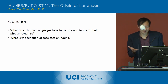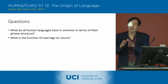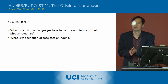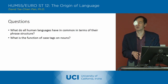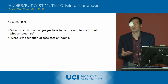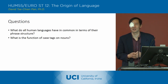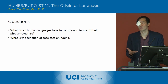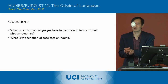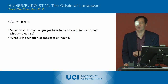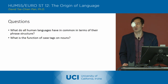The function of case tags is to assign a particular role to a noun in relationship to the verb — it's either the subject, the object, or the indirect object. In English, those are the three main roles that a noun can have that the case tag is assigning, and here it's basically through word order. The subject is going to come before the verb, the indirect object is going to come right after the verb, and the direct object is going to come after the indirect object.